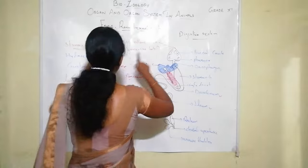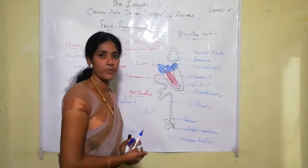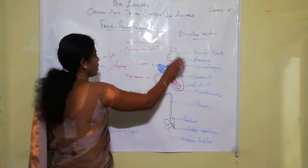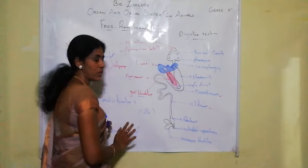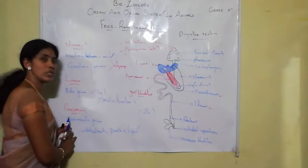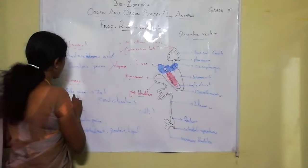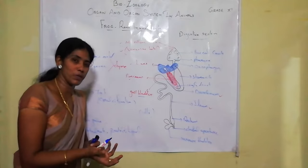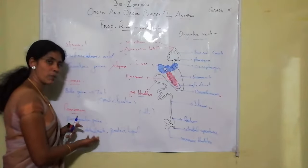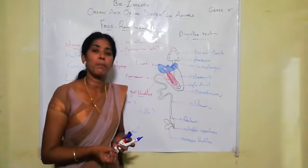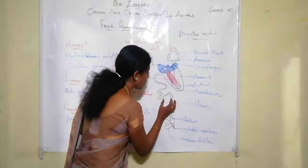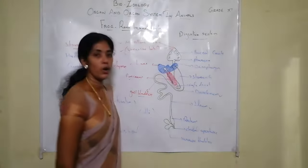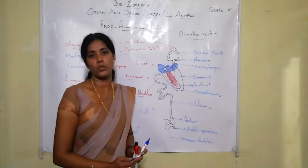So the digestive system of Rana hexadactyla starts from the mouth and ends at the cloacal aperture. The two major glands are the liver and the pancreas. Liver bile juice is used for fat emulsification, while pancreatic juice digests carbohydrates, proteins, and lipids. Absorbed nutrients go to the circulation; waste is eliminated through the cloacal aperture.